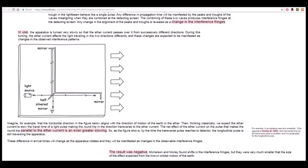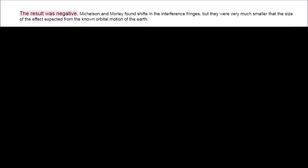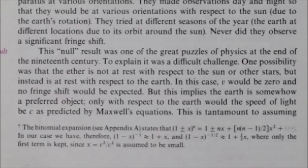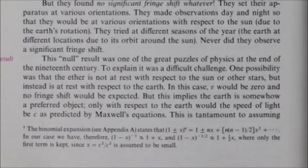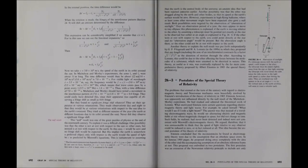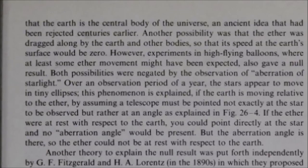Michelson and Morley found shifts in the interference fringes, but they were very much smaller than the size of the effect expected from the known orbital motion of the earth. John D. Norton. This null result was one of the greatest puzzles of physics at the end of the 19th century. One possibility was that velocity would be zero and no fringe shift would be expected. But this implies that the earth is somehow a preferred object. Only with respect to the earth would the speed of light be see as predicted by Maxwell's equations. This is tantamount to assuming that the earth is the central body of the universe. Douglas C. Giancoli.